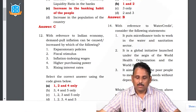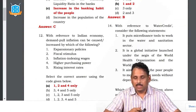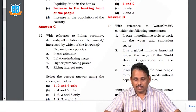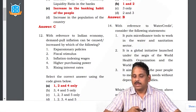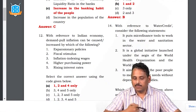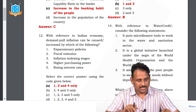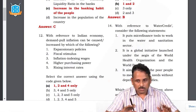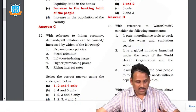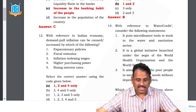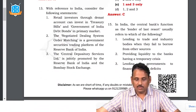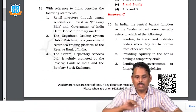Question 12: with reference to Indian economy, demand-pull inflation can be caused or increased by which of the following? Demand-pull means the money in people's pockets has to attract investment — expansionary policies, fiscal stimulus, rising interest rates are all demand-pull side. There is cost-push and demand-pull. The answer is A.